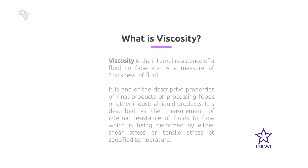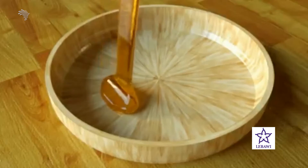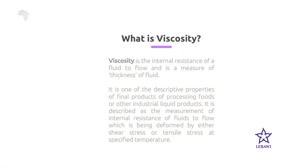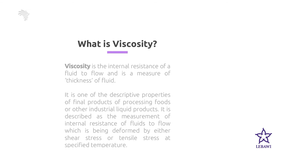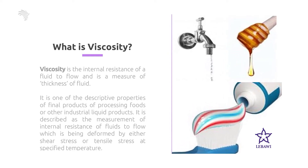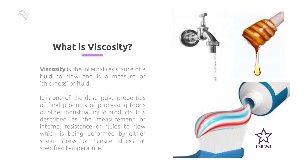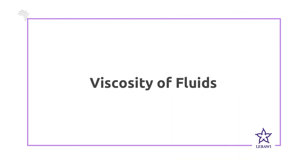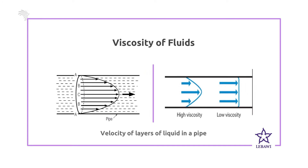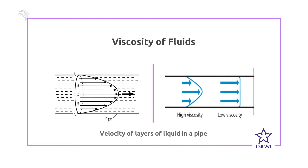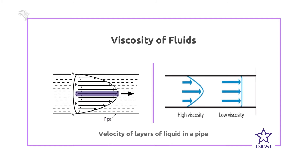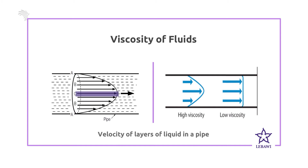Let's come to another property of fluids, which is viscosity. Viscosity is defined as the internal resistance of fluid flow — it is the measure of the thickness of a fluid. As you can see from the diagram, we have three different fluids and their flow nature is totally different. It depends on the resistance between layers of these fluids. Different layers have different velocities, with the central layer having the highest velocity and the top and bottom layers having very small velocity due to the adhesive nature of the fluid.